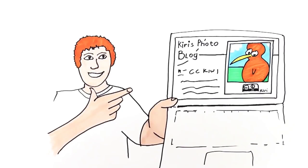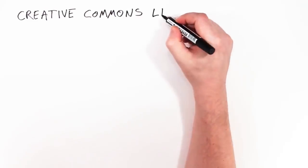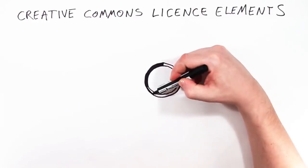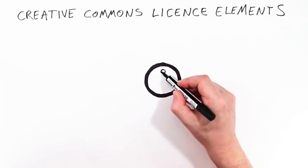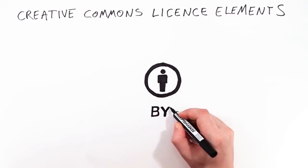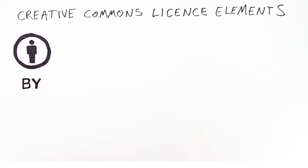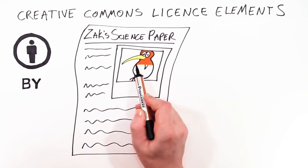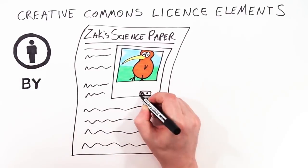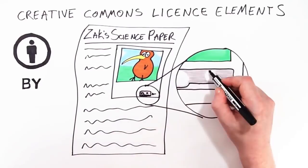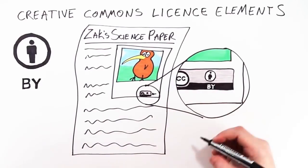There are more rules Kiri could have included. Creative Commons licenses are made up of license elements — you can think of them as rules, and each has their own special symbol. This is Attribution. It means that Zach must acknowledge Kiri when he publishes his science project containing her photo.